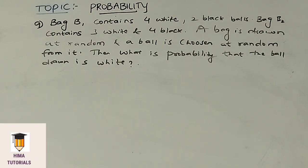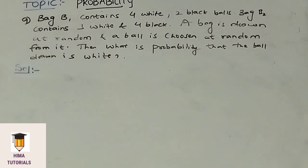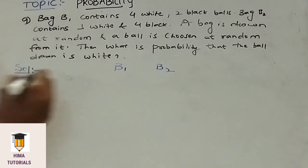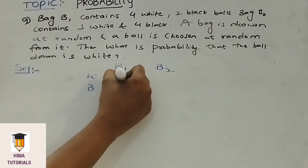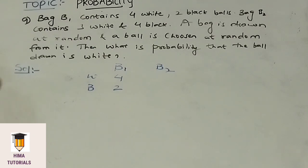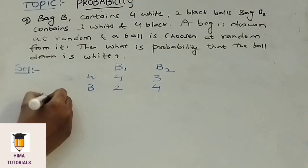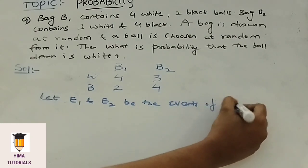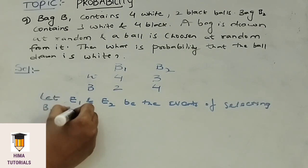Coming to the next question. Bag B1 contains 4 white balls and 2 black balls, whereas bag B2 contains 3 white and 4 black balls. A bag is drawn at random and a ball is chosen at random from it. What is the probability that the ball drawn is white? Coming to the solution. Let E1 and E2 be the events of selecting bag B1 and B2 respectively. Since one bag is selected from 2 bags, P of E1 equals 1 by 2, and similarly P of E2 equals 1 by 2.